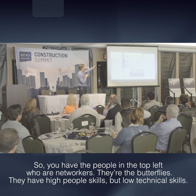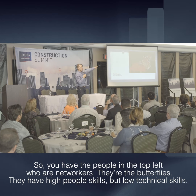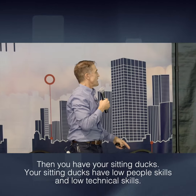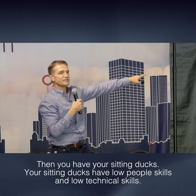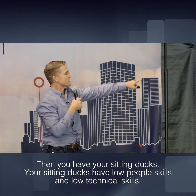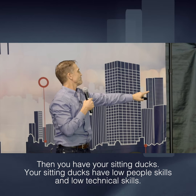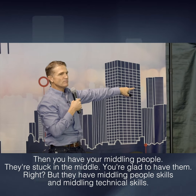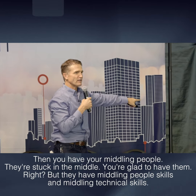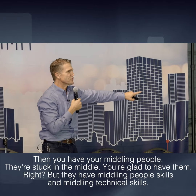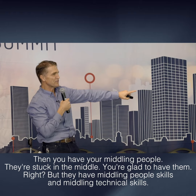You have the people in the top left who are networkers — they're the butterflies. They have high people skills but low technical skills. Then you have your sitting ducks. Your sitting ducks have low people skills and low technical skills. Then you have your middling people — they're stuck in the middle. You're glad to have them, but they have middling people skills and middling technical skills.